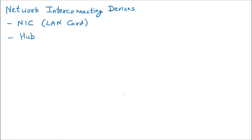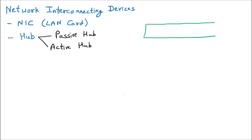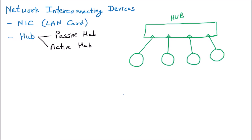We are going to learn the next type of network interconnecting device, and that is the hub. There are two categories: passive hub and active hub. First, let's understand what a hub is. I'm taking one device — this is the hub — and it is having four ports. These ports connect RJ45 cables, so I can connect four Ethernet cables with RJ45 connectors.